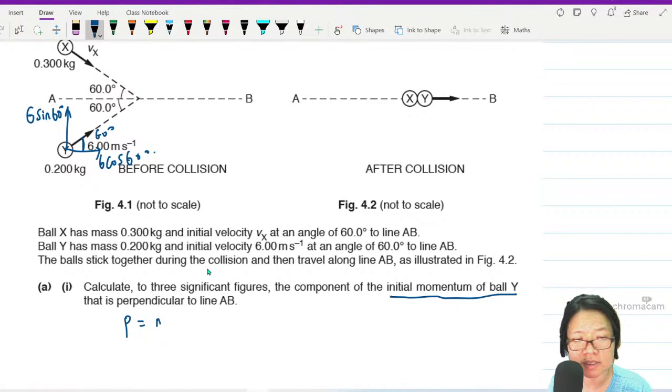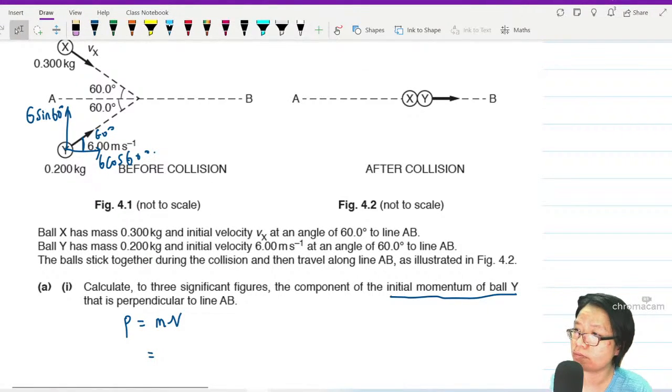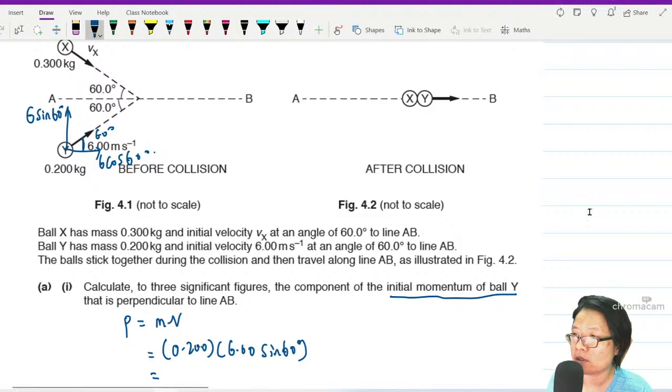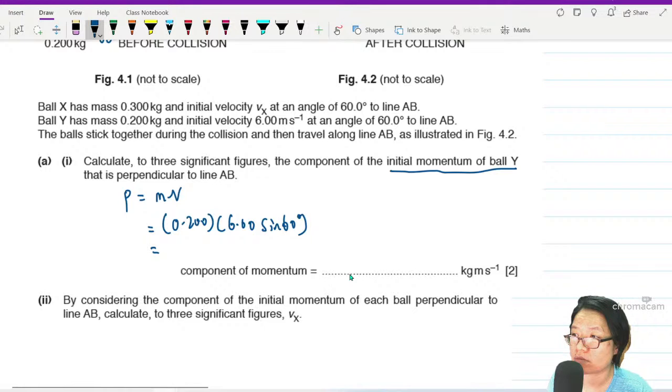So momentum is equal to MV. Since momentum is MV, we can equate this to the mass which is 0.200 and the speed which is 6.00 sine 60. If we press our calculator, we will get 1.04, three significant figures.